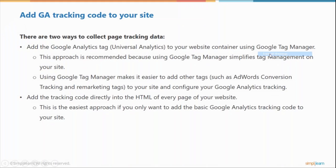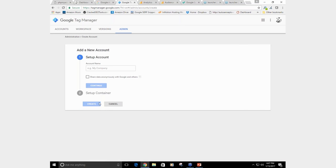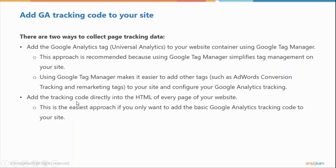There are a few ways to collect page tracking data. You can add the Google Analytics tag — Universal Analytics — to your website container using Google Tag Manager, which you can also access from the google.com/analytics login. Google Tag Manager is great because it automates the propagation of tags throughout your site and makes it easier to track, make changes, roll changes out, and implement the code tracking directly into your site.